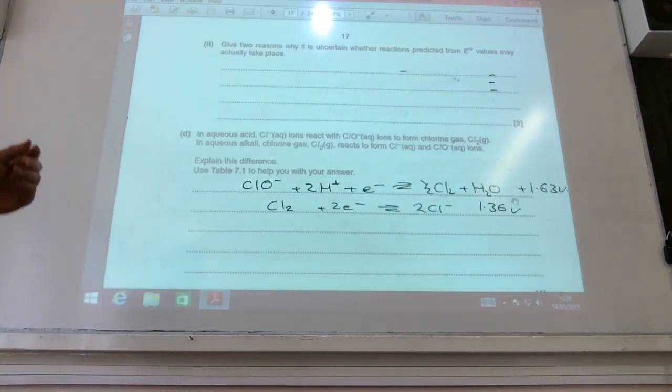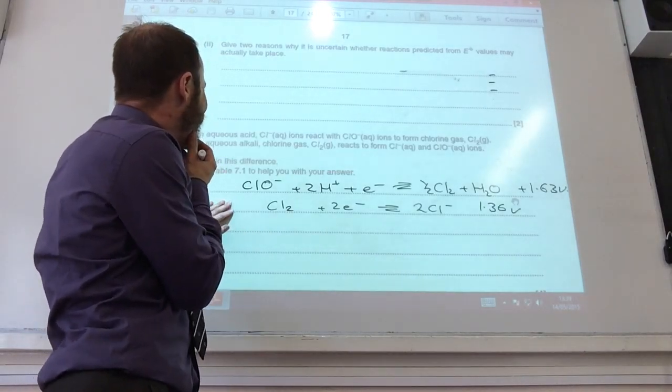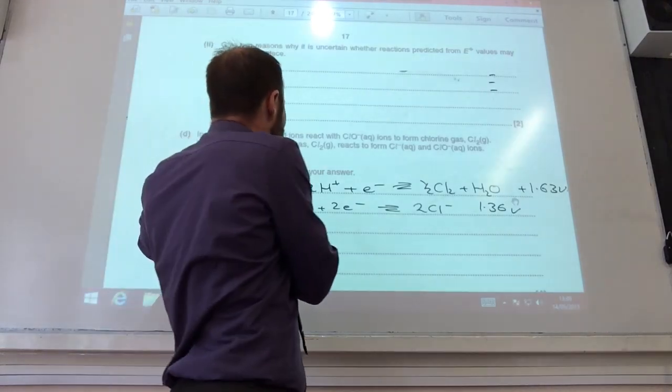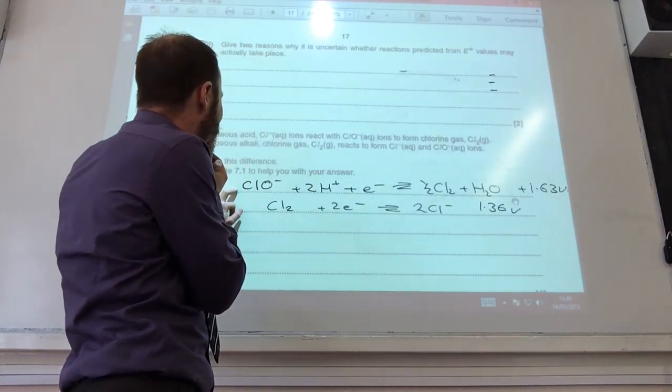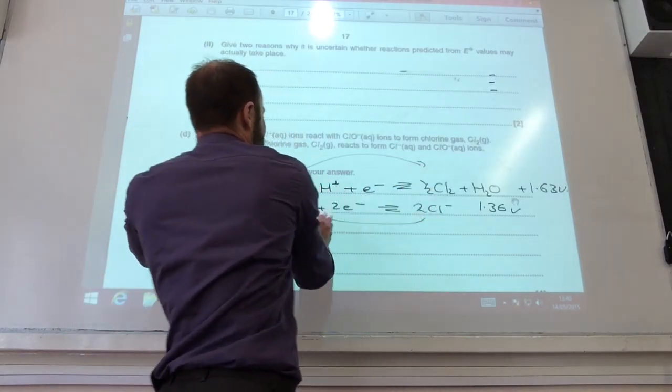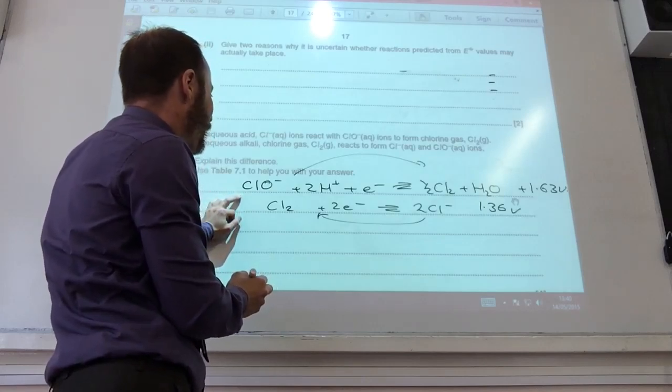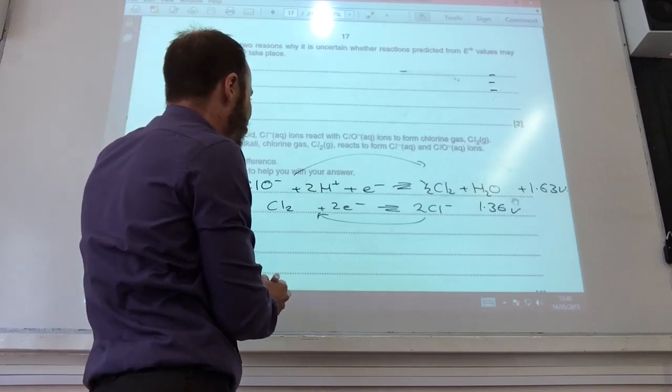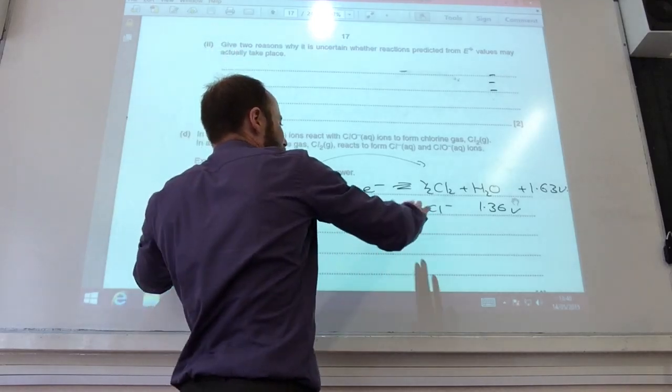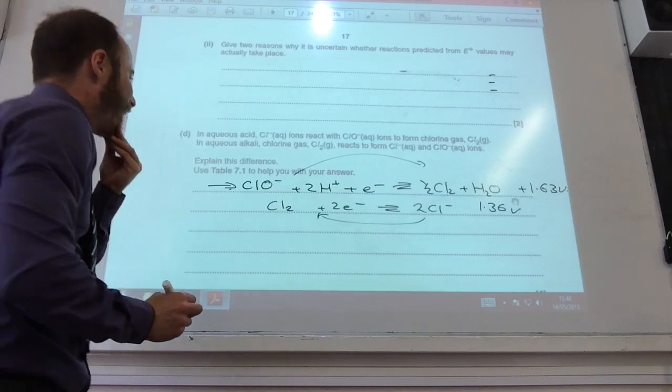Okay, so this is a slightly odd equation. I've written the two equations up from the table here. In aqueous acid, chloride ions react with chlorate ions to form chlorine gas. So in acid, it looks like that one goes that way and that one goes that way as expected. However, in aqueous alkaline, chlorine gas reacts to form chloride ions and chlorate ions. So the equations are reversed. Why is that? Well, you can use this equation to explain it.